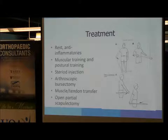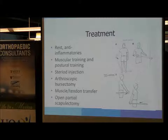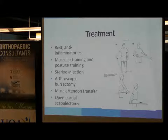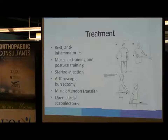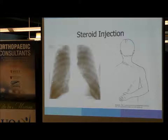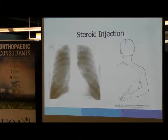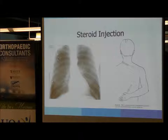Initial treatments are rest, anti-inflammatories, muscular training, and postural training. For bursitis, steroid injections can help. More aggressive and rarely performed surgeries include arthroscopic bursectomy and muscle-tendon transfers for nerve injuries where the serratus or trapezius is affected; an open partial scapulectomy is very rarely performed. For steroid injections, the patient is positioned prone with their hand behind their back, and the needle must be parallel to the floor — not angled toward the rib cage — to avoid pneumothorax, which can occur.